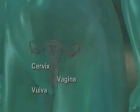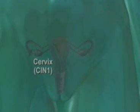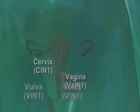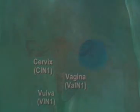Low-grade intraepithelial neoplasias in the mucosa of the cervix, vagina, or vulva are described histologically as cervical intraepithelial neoplasia grade 1, vaginal intraepithelial neoplasia grade 1, and vulvar intraepithelial neoplasia grade 1. These lesions may be caused by infection with low-risk as well as high-risk HPV, which undergo the processes previously described in the life cycle of HPV.